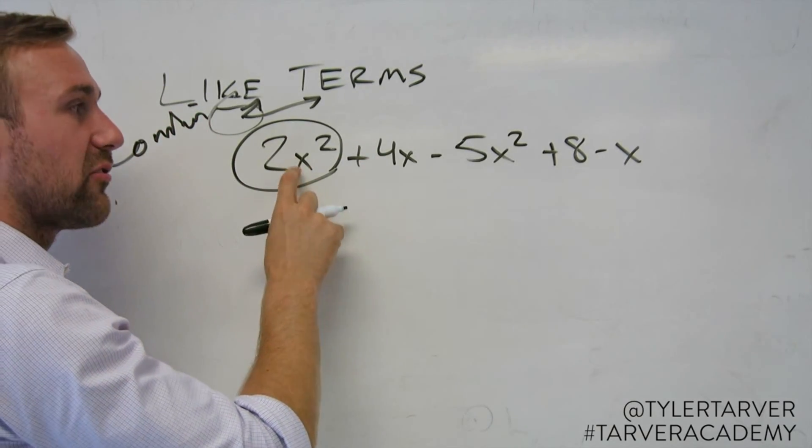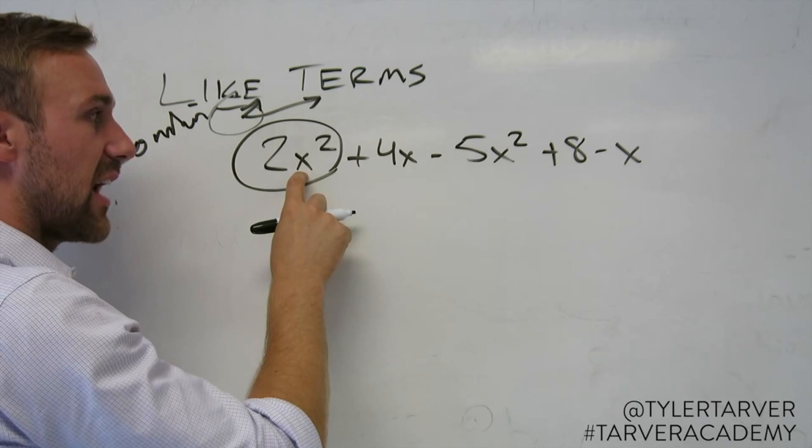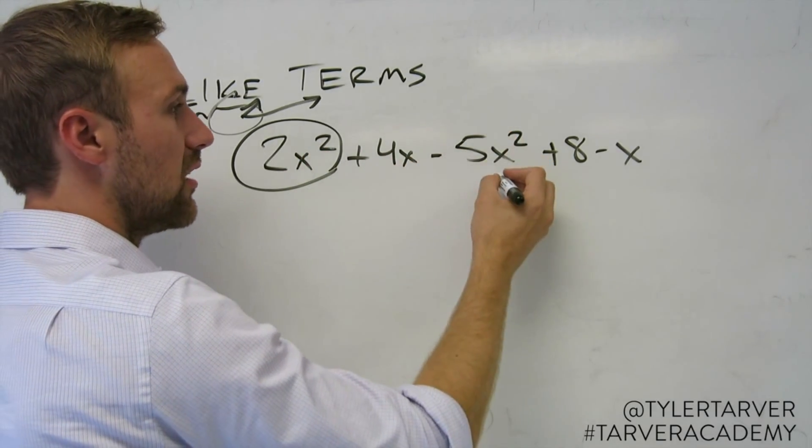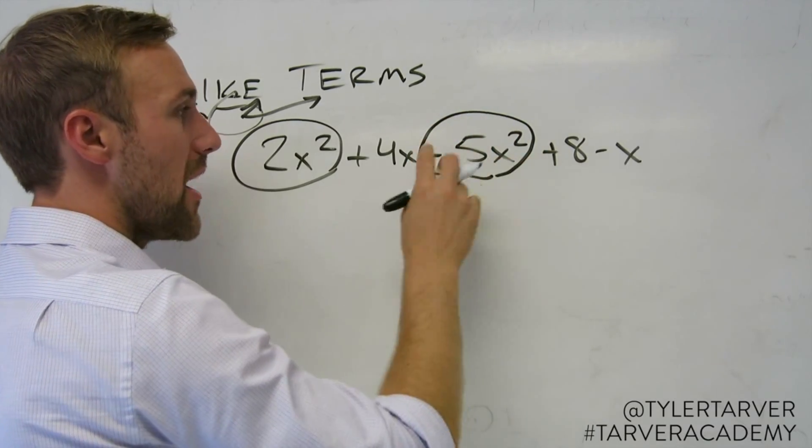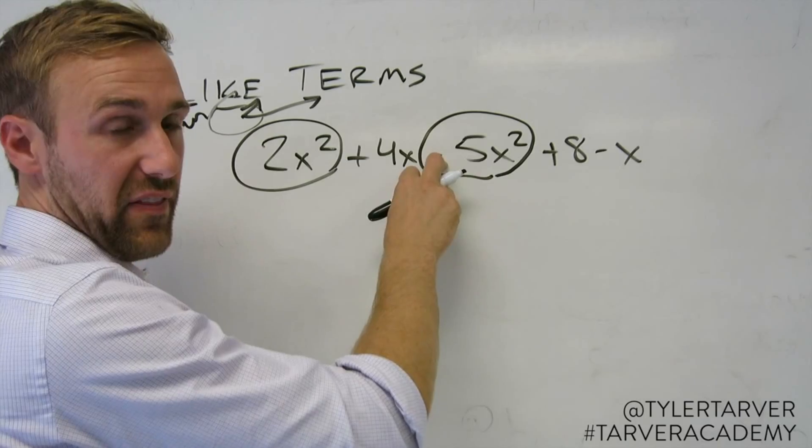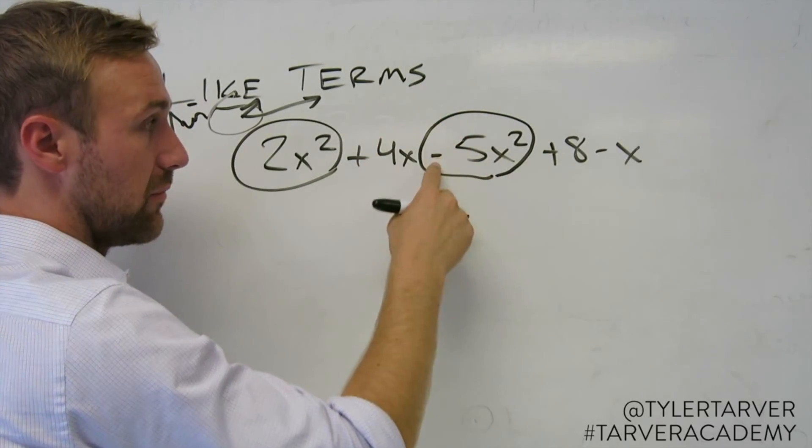Now what I'm doing is I'm looking for everything that has x squared. No. Yes. When I circle it, make sure you include the sign in front of it. A lot of people screw up right there. They'll just circle that and it jacks it up.